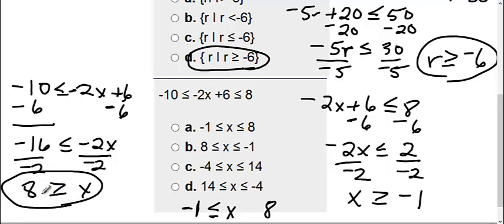On this side, my greater than or equal to is facing the 8, so I need to do the same thing there. So I get negative 1 is less than or equal to x, which is less than or equal to 8, which is choice A.